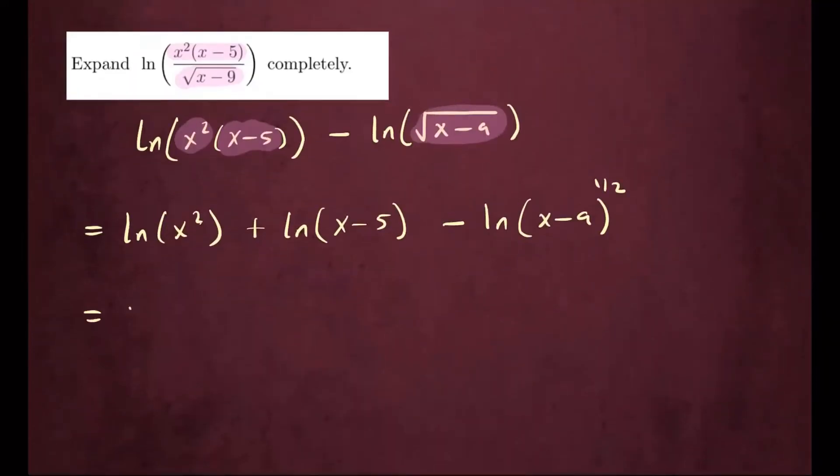So this can be written as two ln of x plus, there's nothing to do with this one, so that's already expanded completely, ln of x minus five.